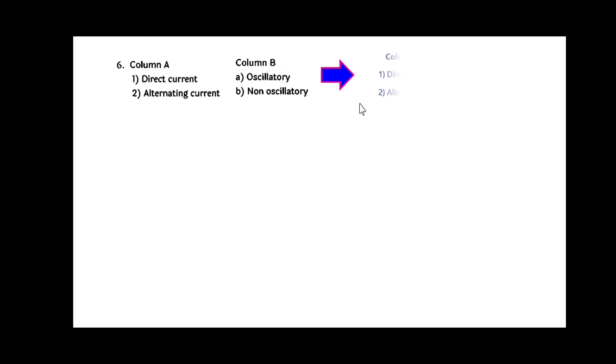Next, number six: in column A the two types of currents — direct and alternating currents — are given. In column B their nature is given. The match is: direct current belongs to non-oscillatory, and alternating current is oscillatory.